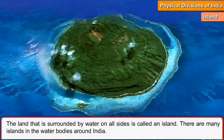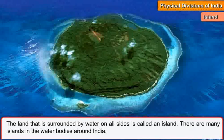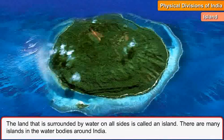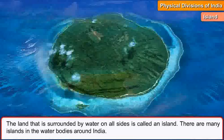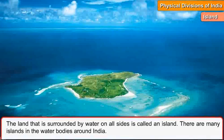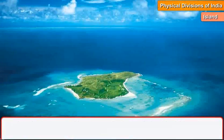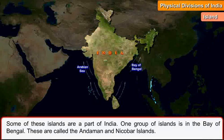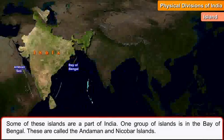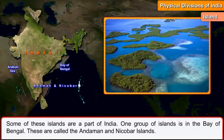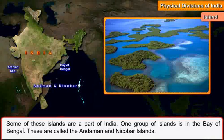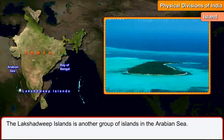Island. The land that is surrounded by water on all sides is called an island. There are many islands in the water bodies around India. Some of these islands are a part of India. One group of islands is in the Bay of Bengal — these are called the Andaman and Nicobar Islands. The Lakshadweep Islands is another group of islands in the Arabian Sea.